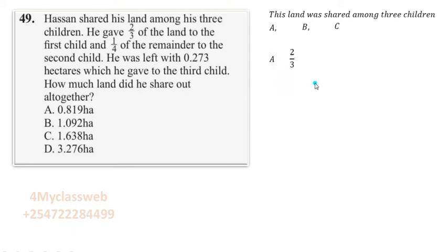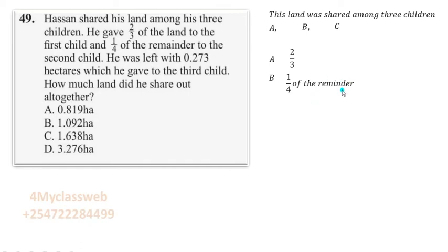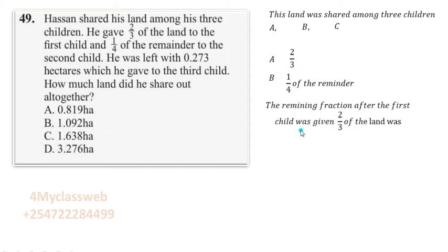And a quarter of the remainder to the second child. So if you look at what the first child received, it was just two-thirds of the land. We are therefore required to work out the remaining fraction of the piece of land, of which we are going to take a quarter to belong to the second child. Therefore, child B received a quarter of the remainder — that is, a quarter of the remaining piece of land after child A was given two-thirds.